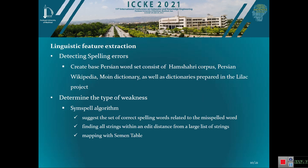The next step of the proposed method is linguistic feature extraction: detecting spelling errors to determine the type of weakness related to dyslexia, detecting grammatical errors, and calculating other linguistic features like lexical diversity and productivity index. In spelling error detection, the first step is creating an appropriate dictionary that is comprehensive and useful enough. This was done by merging Wikipedia, Hamshahri, and Moin dictionaries as well as dictionaries prepared in the LILAC project. A plugin was added after detecting spelling errors that can suggest correct spellings for misspelled words, finding all strings within an edit distance from a large list of strings. By comparing two words based on a semantic table, the system can determine the related weakness in dyslexia.